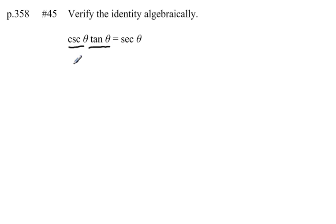So I know cosecant of theta is equal to 1 over the sine of theta, times, I know that tangent of theta equals sine of theta over the cosine of theta. We're trying to show that this equals the secant of theta.